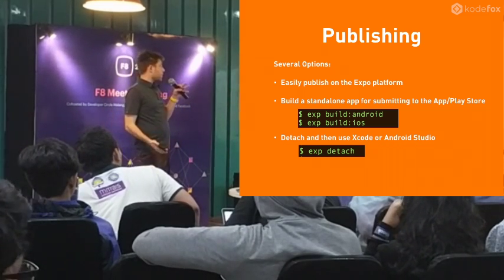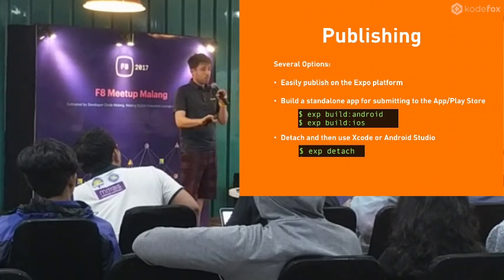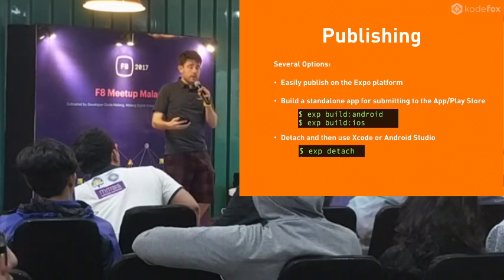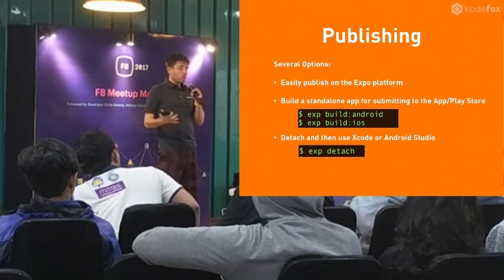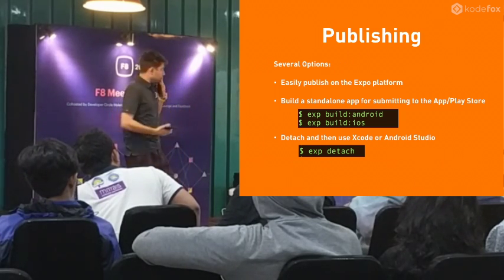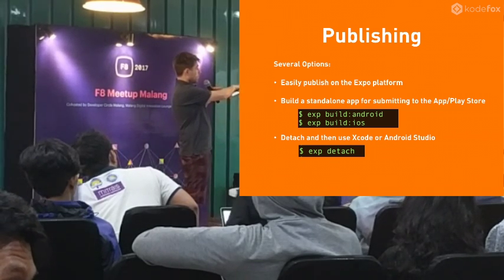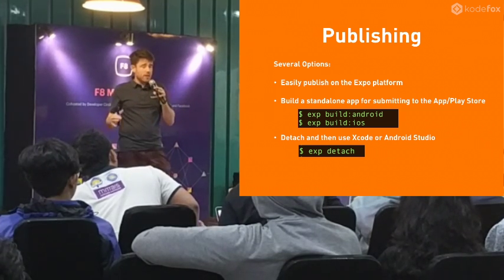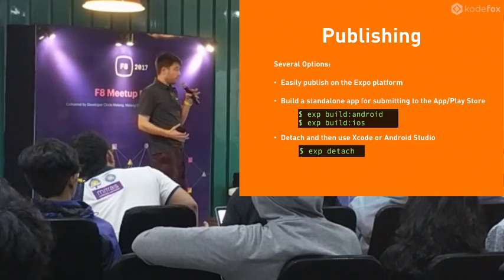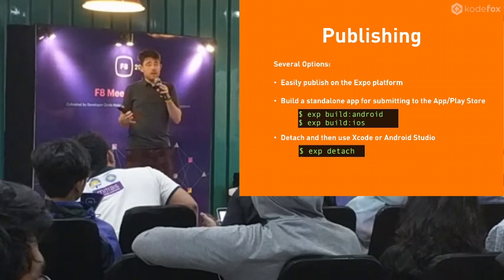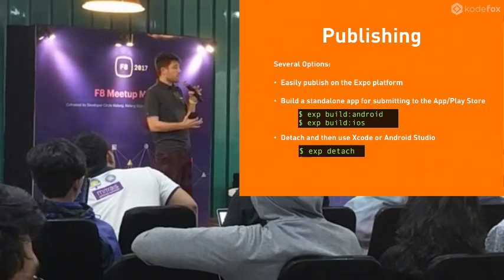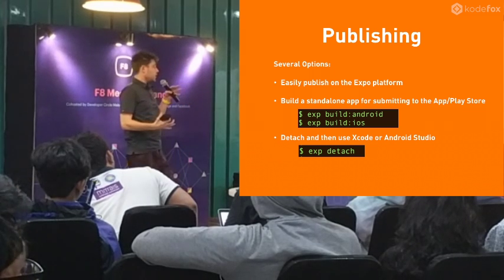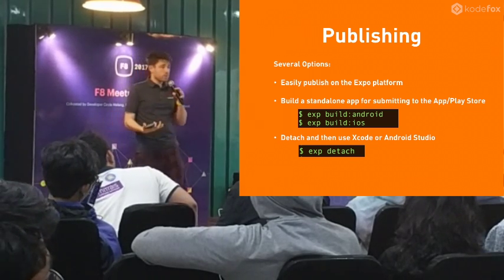When we want to publish our app, we can use the Expo platform and send someone a link — if they have the Expo app, they can run the link and demo our app. But eventually we want to get to the app store. We can use the Expo build tool to build for Android or iOS, and it doesn't require Xcode or Android Studio — it just does the work for you. It gives you an APK for Android or an IPA for iOS to submit to the app store, or you can detach from Expo and build it yourself using Android Studio or Xcode.